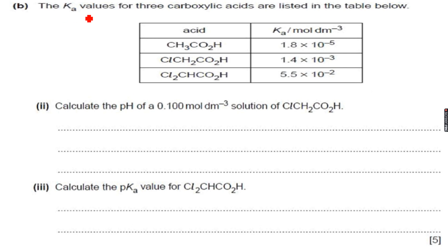The Ka values for three carboxylic acids are listed in the table below. The acids are ethanoic acid which has a Ka of 1.8 into 10 to the power of minus 5.